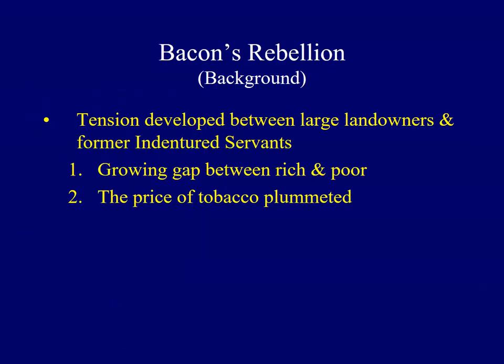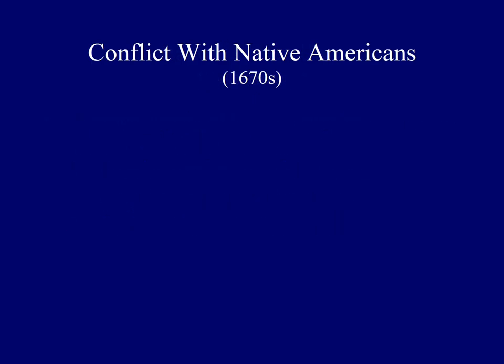One final catalyst which led to increased tension between the two groups would be increased concern over conflict with Native Americans. As additional settlers — many of whom were young, single men — moved to outlying areas of the Chesapeake, they often squatted illegally on Indian land. Native Americans, frustrated with the increasing pressure on lands supposedly reserved for them, attacked. When Virginia's governor William Berkeley proposed the establishment of a series of forts along the western frontier rather than a military response, frustrated settlers took matters into their own hands. They were led by a fairly recent arrival to the area named Nathaniel Bacon.